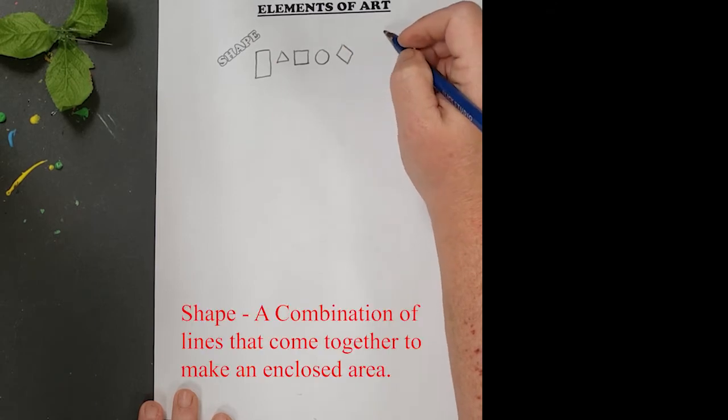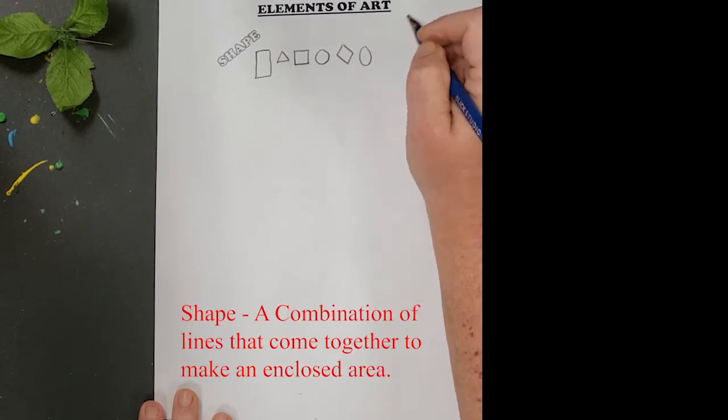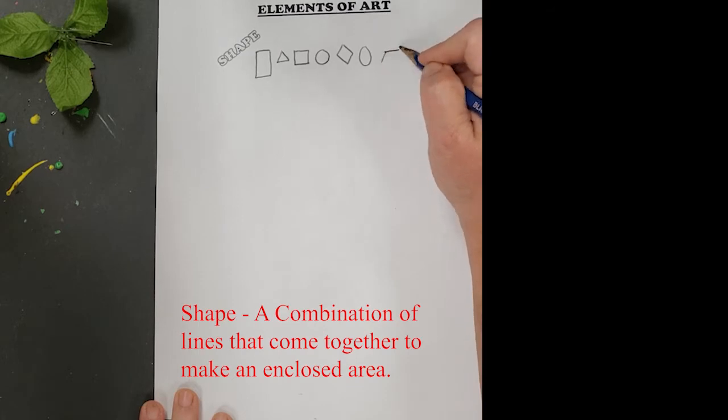What is a shape anyway? A shape is a combination of lines that come together to make an enclosed area. This enclosed area makes our shape.